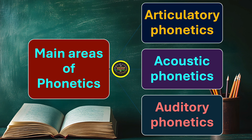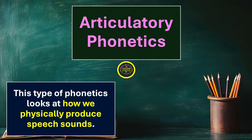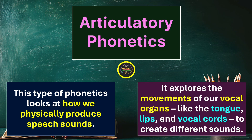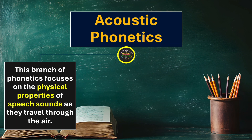The first is articulatory phonetics. This type of phonetics looks at how we physically produce speech sounds. It explores the movements of our vocal organs — like the tongue, lips, and vocal cords — to create different sounds. Articulatory phonetics is all about the way we use our vocal organs to create speech sounds, where different organs of speech like the tongue, lips, and vocal cords each play their own individual parts.